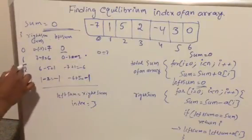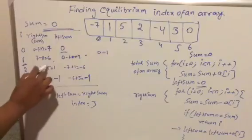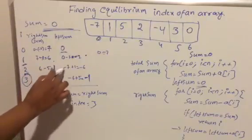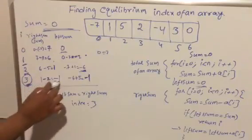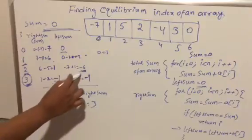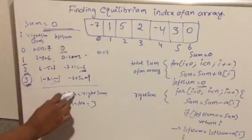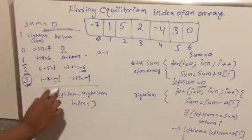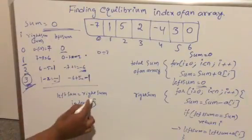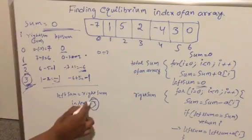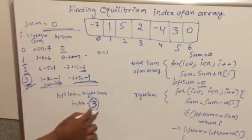At index one, the element is minus seven. When i equals two, six minus five equals one. When i equals three, one minus two equals minus one, and the left sum — which we've been increasing — is minus six plus five, which is minus one. Here, the left sum equals the right sum, so the equilibrium index is three.